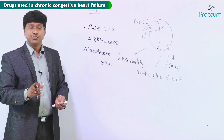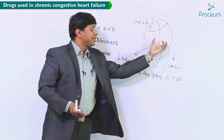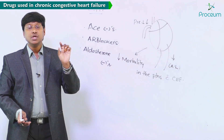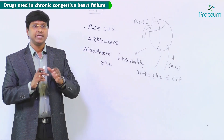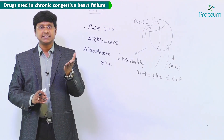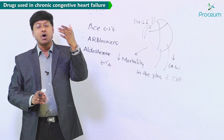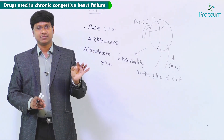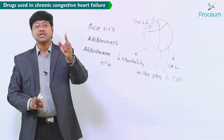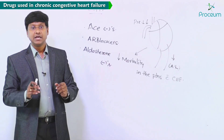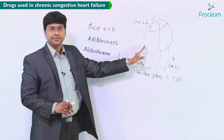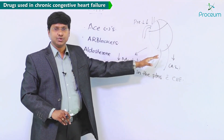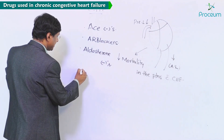We have one more group of drugs which will reduce myocardial contractility. In individuals with chronic congestive heart failure, the oxygen demand of the myocardium should not be increased. The compensatory mechanism that was increasing oxygen demand was activation of the sympathetic nervous system. So if you want to reduce oxygen demand or myocardial contractility, you have to give beta blockers.